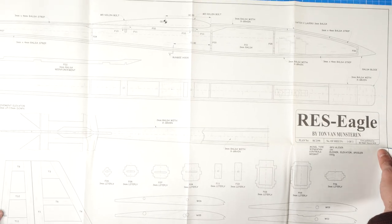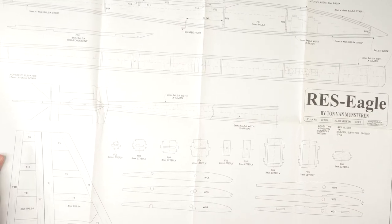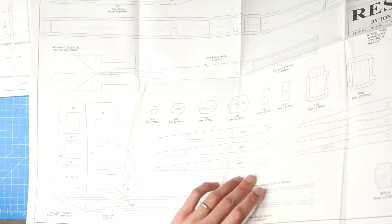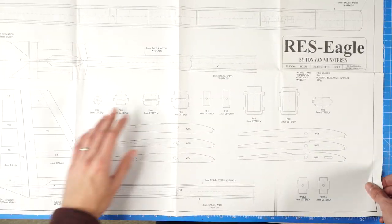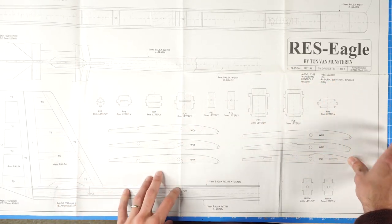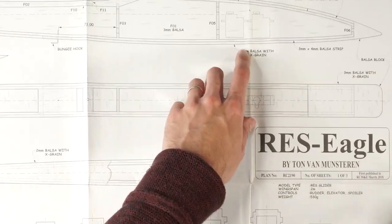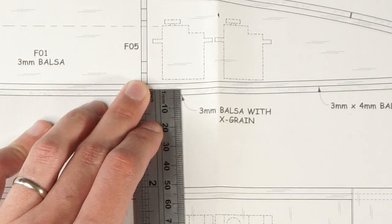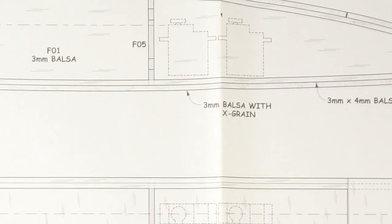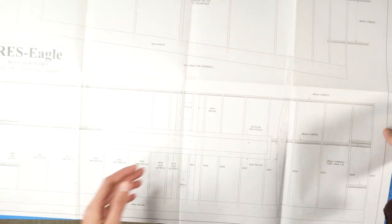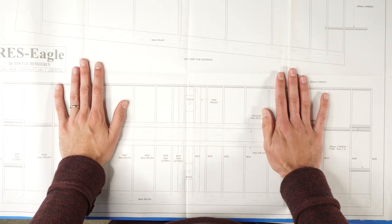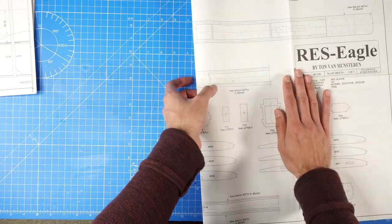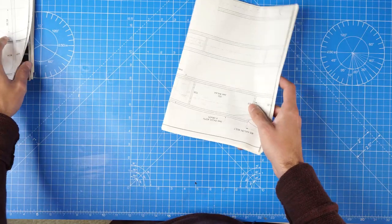This one is printed in A1 size. Here we can see the fuselage, the position of the servos, CG location, wing airfoils, fuselage formers, and so on. If you want to check the scale of the plans, just take a look at one of the pieces and check its stated measurement. For example, if it says a part is three millimeters thick, measure it — if it is three millimeters, the plans are at the correct scale. When you print plans yourself, always make sure you have the correct scale before you start building.